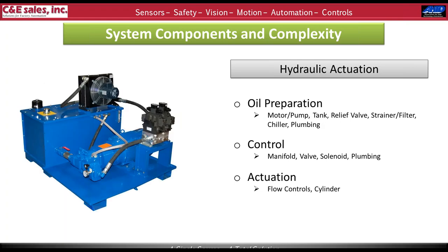Moving into hydraulic actuation — it's similar in many ways to pneumatic in that we have a lot of upstream preparation for power generation prior to actually being able to move that actuator. One difference is that with pneumatics, air production is typically done at the facility level, whereas with hydraulics you'll be at machine or localized energy production. So we have a motor, pump, tank, relief valve, strainers, and filters — usually in several multiples. Sometimes one tank runs several stations, but a lot of times it's per point of use.